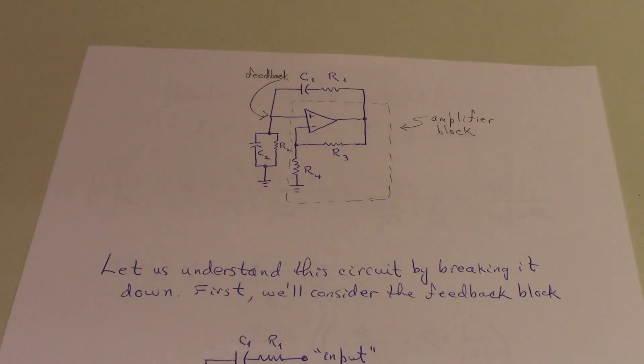In the case of a Wien Bridge Oscillator, that process is mediated through resistors and capacitors, and we described one particular implementation of the Wien Bridge circuit that involved an operational amplifier.